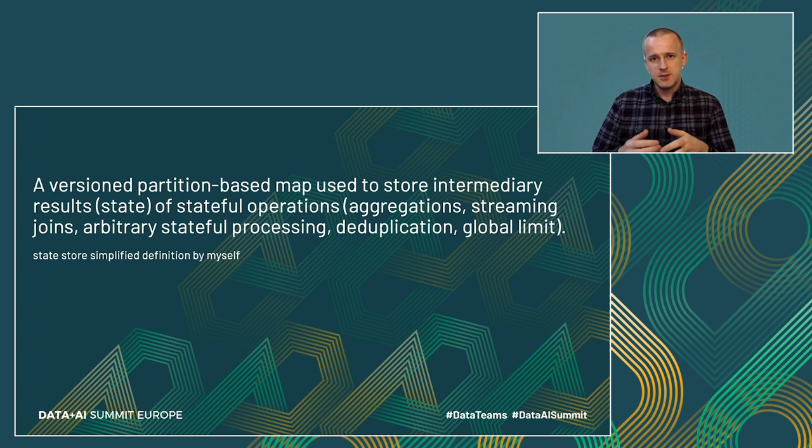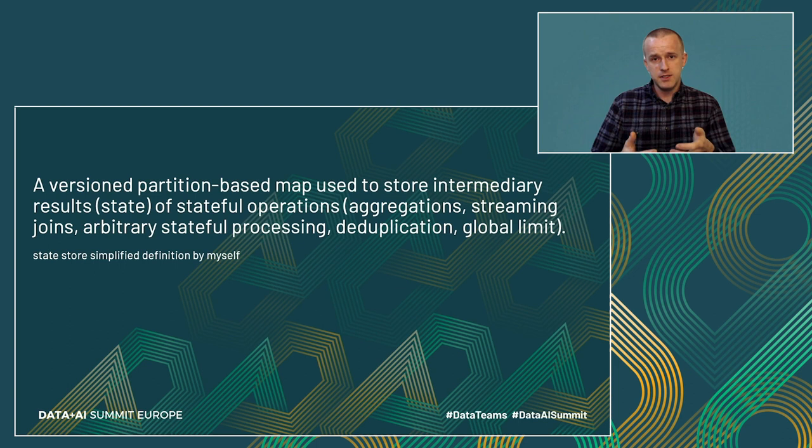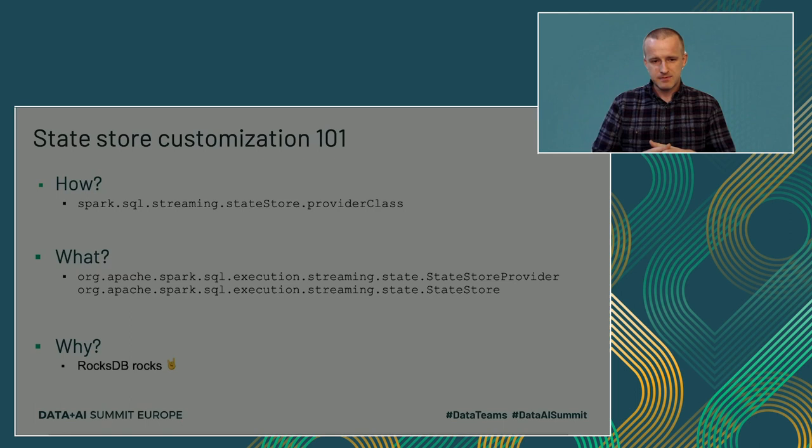From this definition there are two important concepts to retain. The first is that it's key-value: there is the concept of a key which corresponds to the state key, and a value which corresponds to the state value. The second point is about versions. As you know, Apache Spark executes in micro-batches and in simple terms, every micro-batch corresponds to one specific version of the state store.